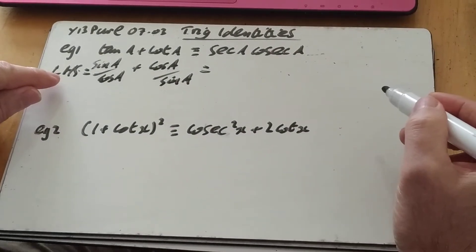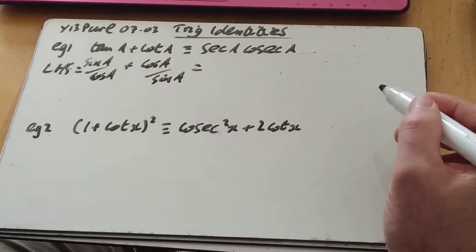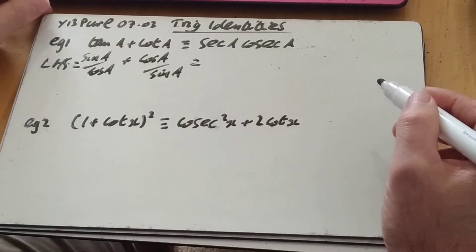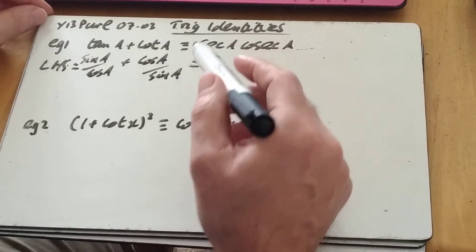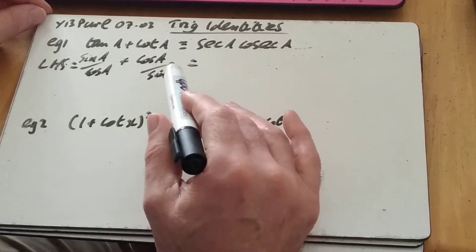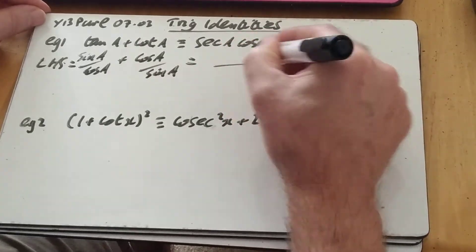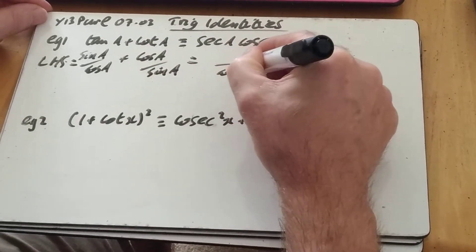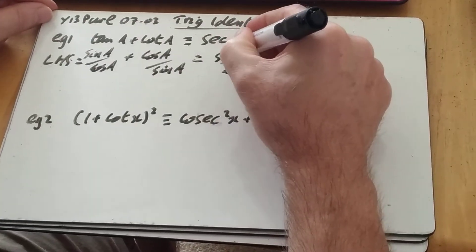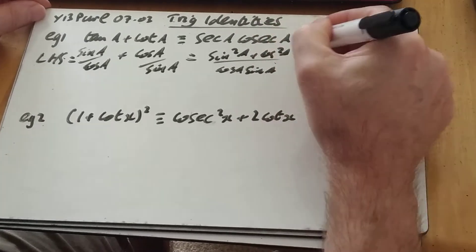So I'm writing LHS for left-hand side. I can use equals for now. Equals, true for all values, equivalent to, well, I don't think you're going to lose marks if you just put equals rather than that. So we're just going to use equals for now. So there's my rewriting. If I put everything under a common denominator of cos A sine A and cross multiply, I get sine squared A on the top plus cos squared A on the top there.